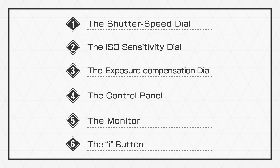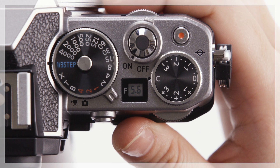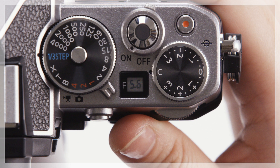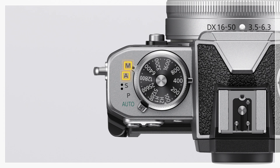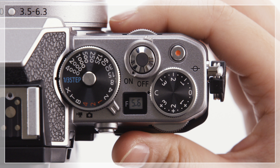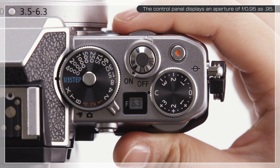Now let's find out what the control panel is for. The control panel shows the aperture. In modes A and M, it shows you the value chosen by rotating the subcommand dial.